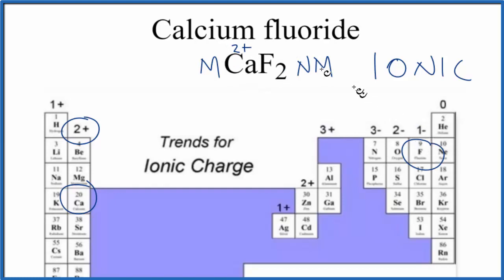Fluorine, that forms 1 minus. We usually just write minus. Since the calcium is 2 plus, these ions are 2 plus, we need two fluorine atoms to balance that out. That's why it's CaF2.